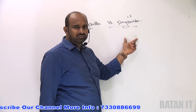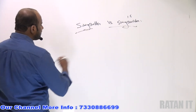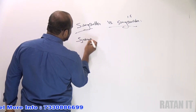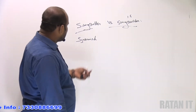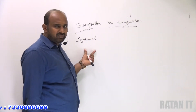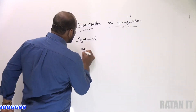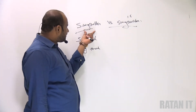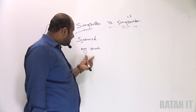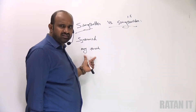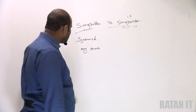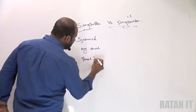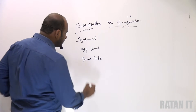What is the difference? StringBuffer methods are synchronized. Synchronized means only one thread can access at a time. So how many threads can access StringBuffer? Only one thread can access it.